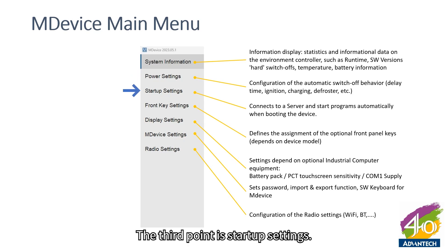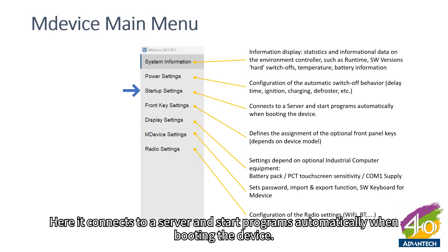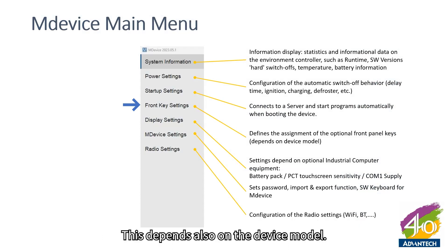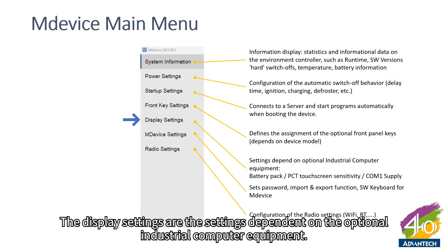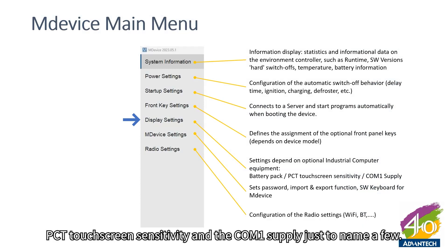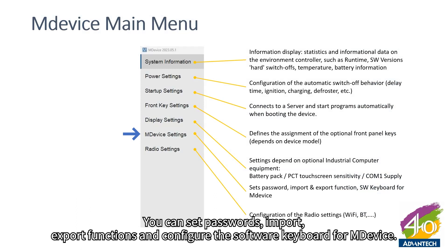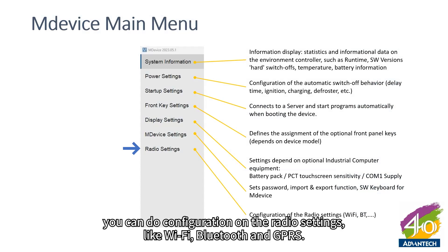The third item is Startup Settings, where the device connects to a server and starts programs automatically when booting. Front Key Settings defines the assignment of optional front panel keys, which depends on the device model. Display Settings cover optional industrial computer equipment like battery pack, PCT touchscreen sensitivity, and Chrome 1 supply. M-Device Settings handles internal settings like passwords and import/export functions. Finally, Radio Settings lets you configure Wi-Fi, Bluetooth, and GPRS.